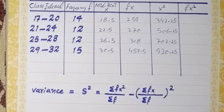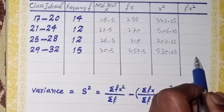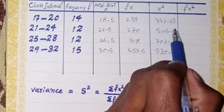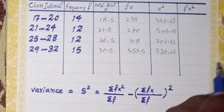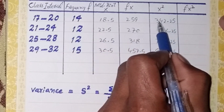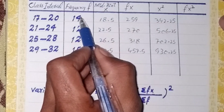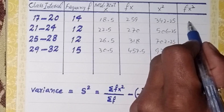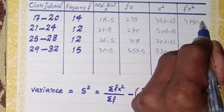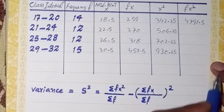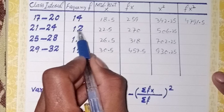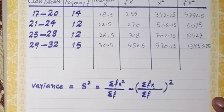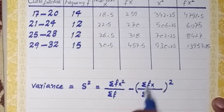After that, we find each value of the fx² column. We multiply the x² column and the f column with each other. In the first row, f is 14 and x² is 342.25, so fx² is 4791.5. In the second row, 12 multiplied by 506.25 gives fx² equal to 6075. Each column required for the calculation of variance has now been completed.